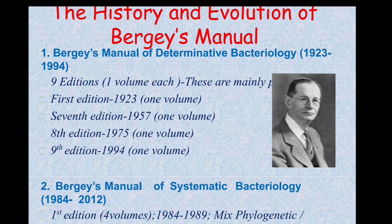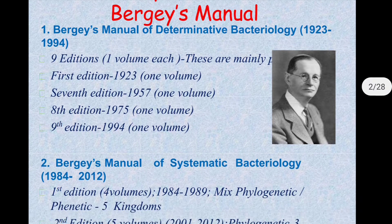There are two types of Bergey's Manual. The first is Bergey's Manual of Determinative Bacteriology, and the second is Bergey's Manual of Systematic Bacteriology.